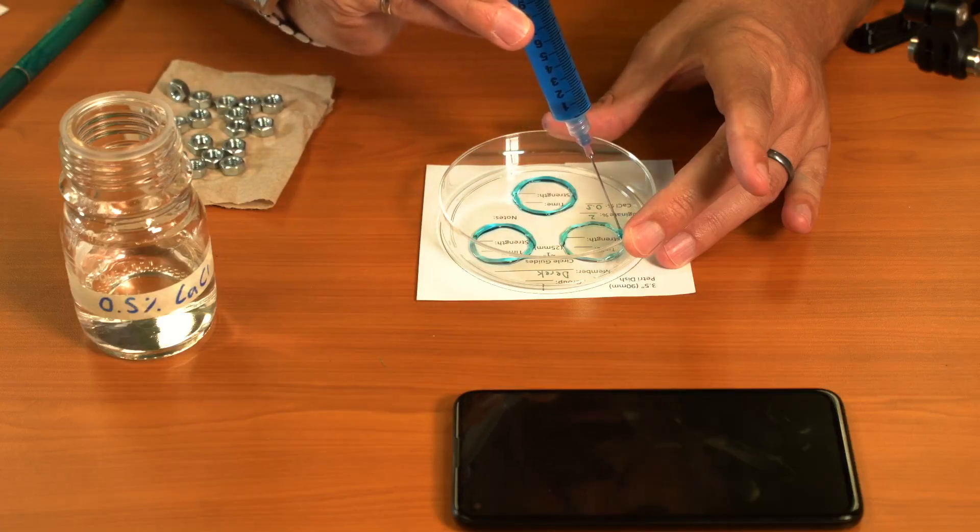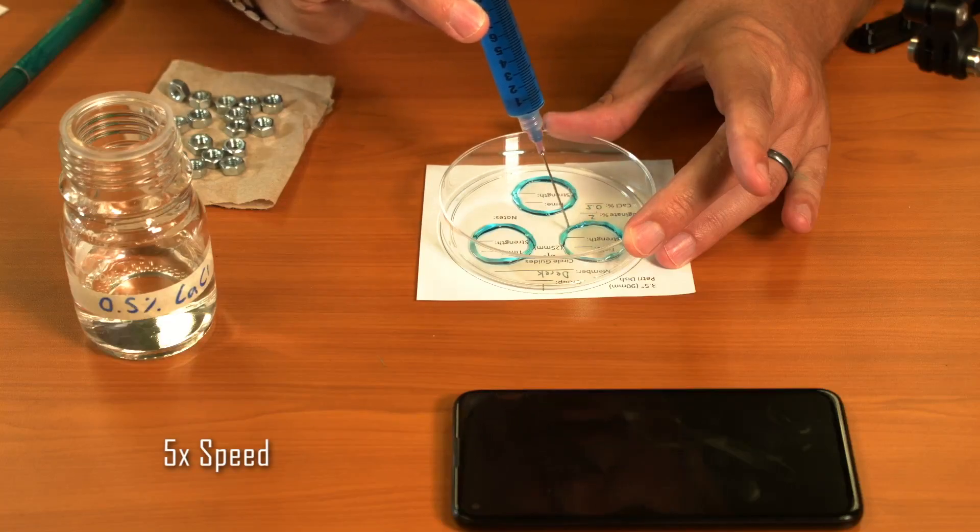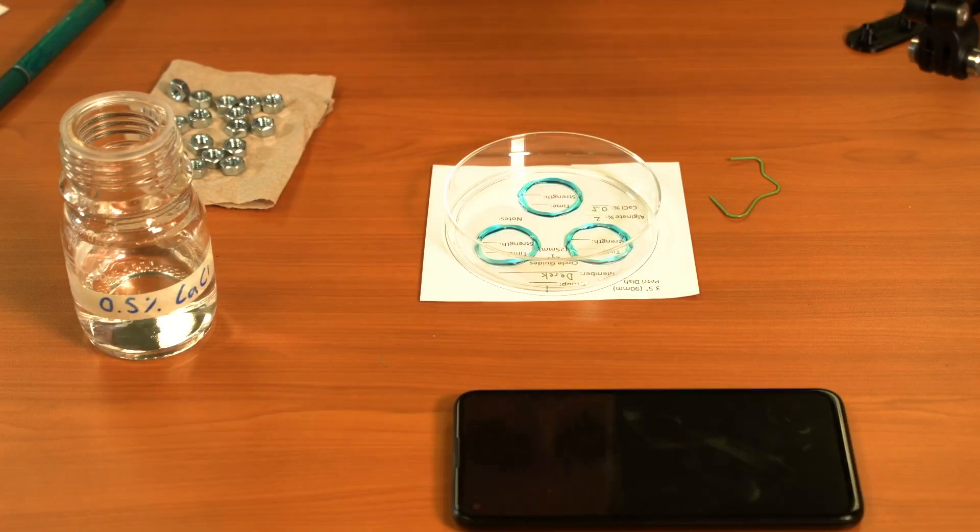My first one here is actually quite a bit smaller than my second two, so I'm going to fill it in a little bit more. Once you're happy with your circles and you've got them all reasonably consistent, put your syringe to the side.